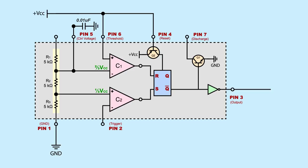Pin seven is a discharge pin. It's connected internally to a transistor that turns on when the 555 output is low. This allows anything connected to pin seven to be connected to ground through that internal transistor. And pin eight gets connected to VCC.